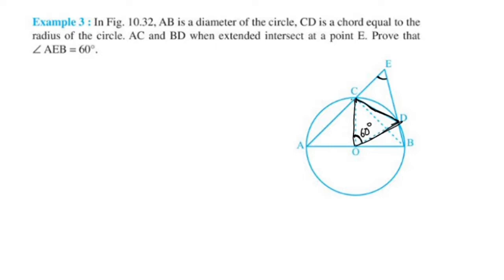CD has an arc. The angle subtended at the center is double the angle subtended by any point on the remaining part of the circle.